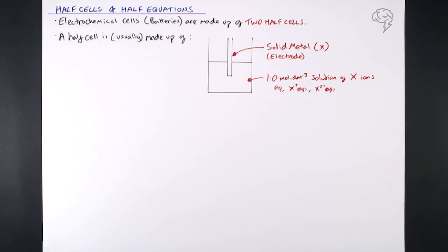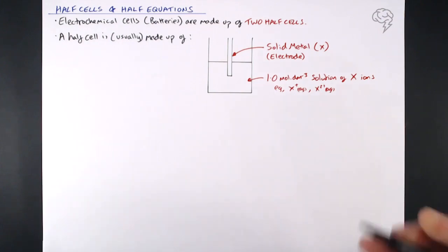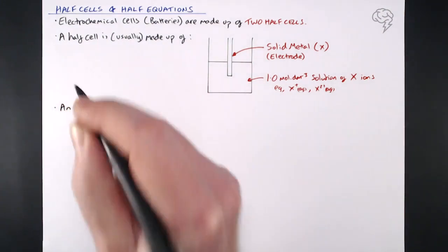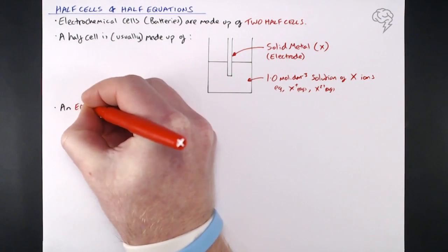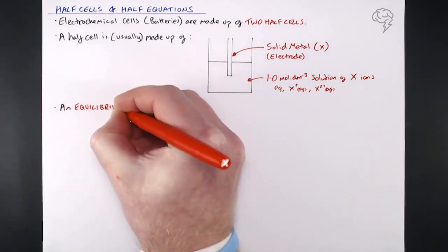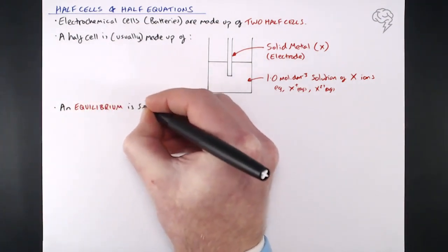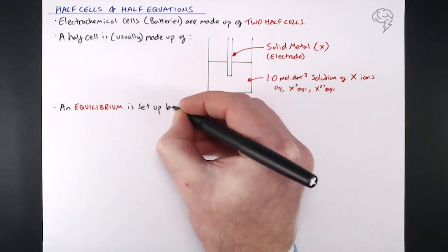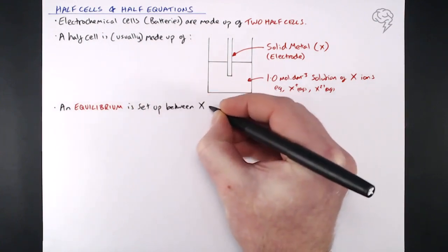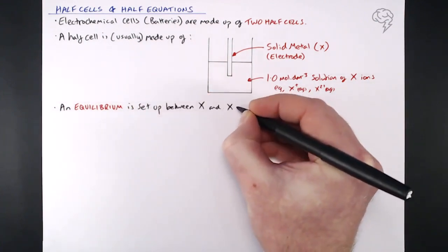Sometimes we're looking at the redox between two ions in solution — for those exceptions, check out the tutorial on that. But for the most common example of a half cell: we've got a solid metal and we've got a solution of those metal ions, and we have an equilibrium being set up between that solid metal X and those aqueous ions of X in the solution. It is a dynamic equilibrium.